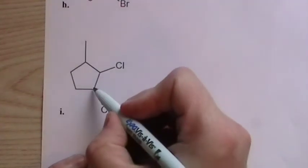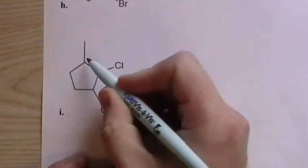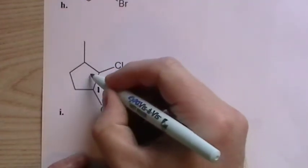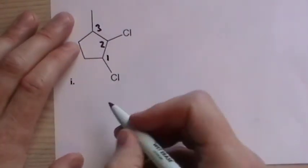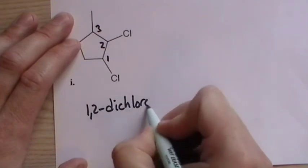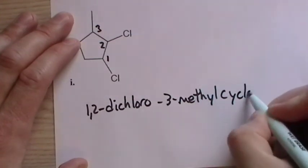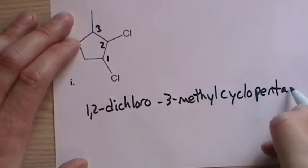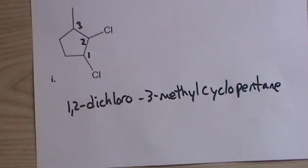Now, cyclopentane. And we can number from this side. These three are next to each other. So it's got to be one, two, three, or one, two, three. This is chloro. This is methyl. So it should be one, two, three. So we will call this one, one, two, dichloro, three, methyl, cyclopentane. And there you go. Oops, make sure that's on there. There we are.